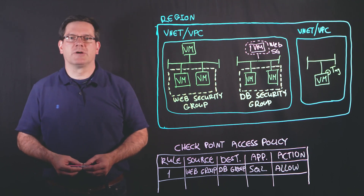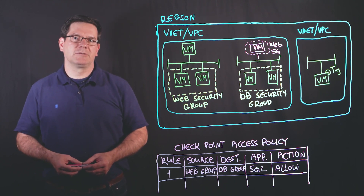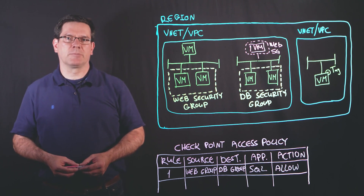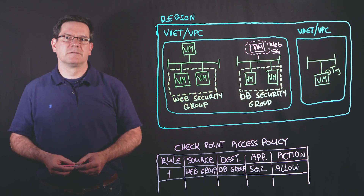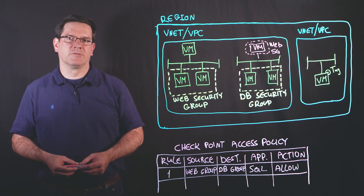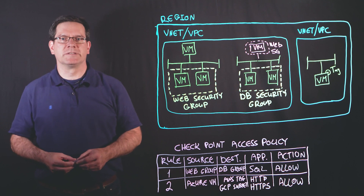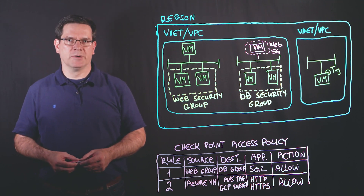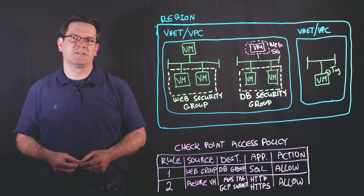This is true across VNets, availability zones, regions, and other attributes. The Cloud Guard controller allows us to consolidate resources from several cloud platforms into a single rule. For example, in this rule, a VM in Azure is allowed to communicate to tagged instances in AWS and to VMs in a specific GCP subnet.